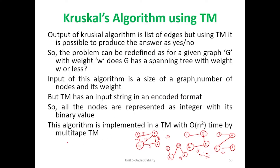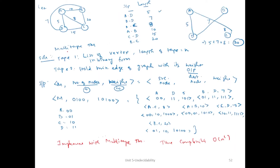There are two algorithms available for solving the minimum weight spanning tree: Prim's algorithm and Kruskal's algorithm, both already covered in data structures. To find a solution, we first arrange the edges of the given graph in ascending order, then visit one edge at a time, and those nodes become visited nodes that are not repeated on a second visit.